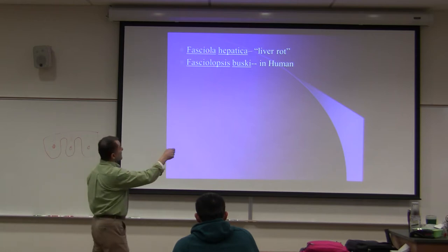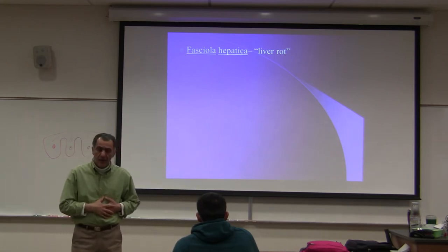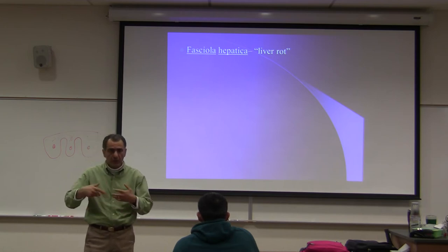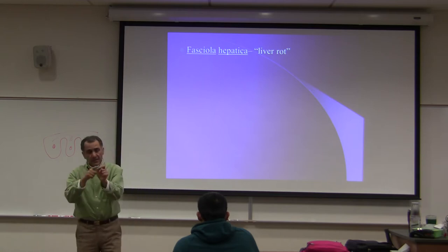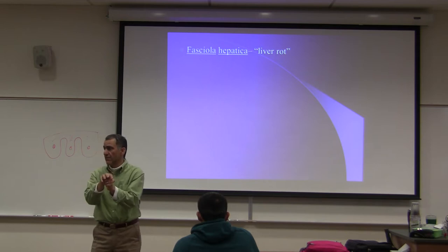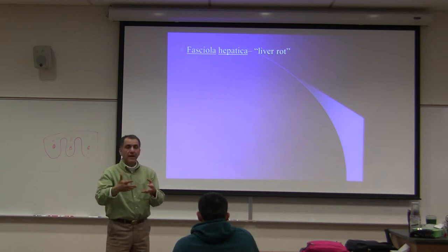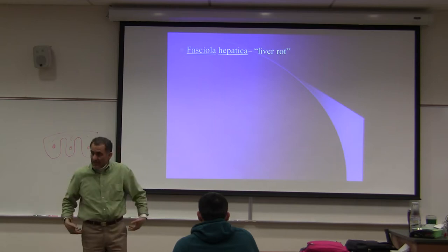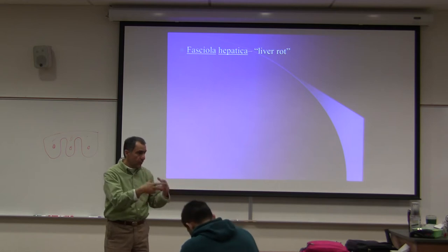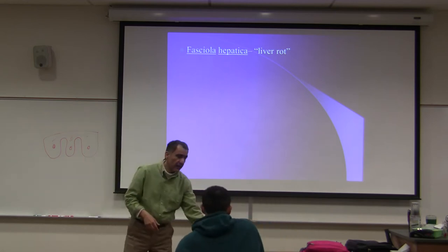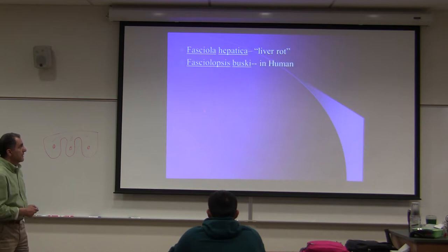Fasciola hepatica is in the liver of cow and sheep. The cow or sheep defecates into a body of water, then the cercaria comes out and finds vegetation - usually watercress, which humans also eat. Another cow comes and eats the watercress and becomes infected. The eggs of this parasite, Fasciola hepatica, are found in the feces of cows and sheep. It goes through the snail as well, and eventually the cercaria comes out of the snail and goes into watercress.